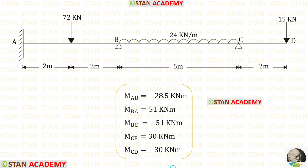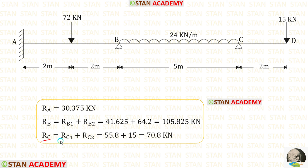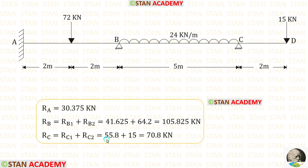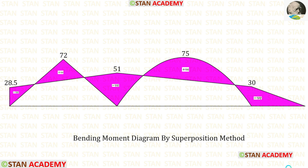We have now calculated all moments and found reaction RA. To find RB, we add RB1 and RB2, giving 105.825 kN. To find RC, we add RC1 and RC2. RC2 comes from the point load acting downwards on the overhang, so RC2 acts upwards. Adding the two values gives RC equal to 70.8 kN. The shear force diagram is shown, and we can draw the bending moment diagram by the superposition method. Thank you for watching this video.